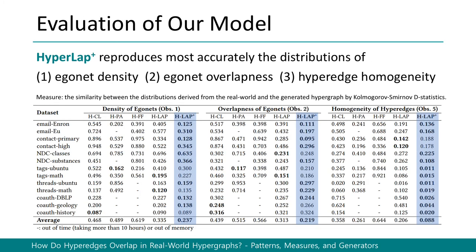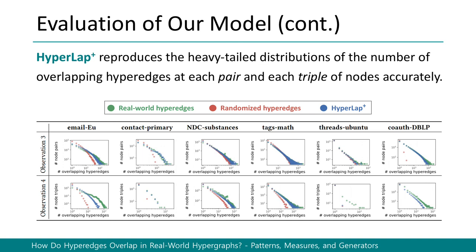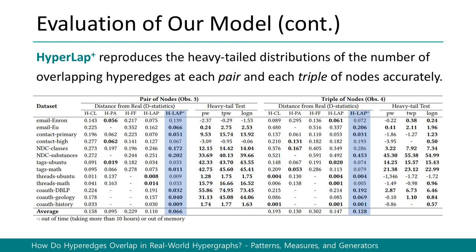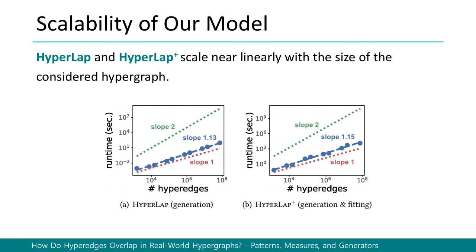HyperLAP+ most accurately reproduces the distributions of egonet density, egonet overlapness, and hyper-edge homogeneity — that is, the d-statistics between distributions of real-world and generated hypergraphs are lowest for HyperLAP+. HyperLAP+ also accurately reproduces the number of overlapping hyper-edges at each pair and triple of nodes. Furthermore, the proposed methods, HyperLAP and HyperLAP+, scale near linearly with the size of the input hypergraphs.